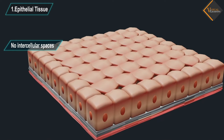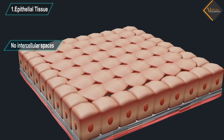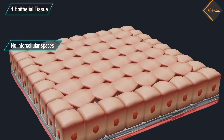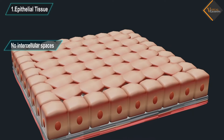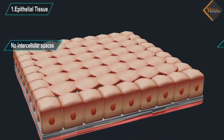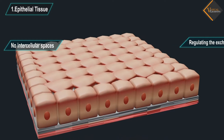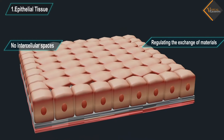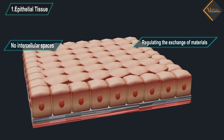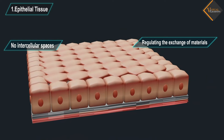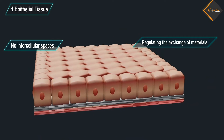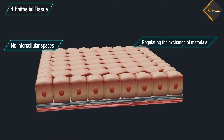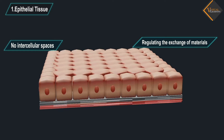Anything entering or leaving the body must cross at least one layer of epithelium. As a result, the permeability of the cells of various epithelia play an important role in regulating the exchange of materials between the body and the external environment and also between different parts of the body.